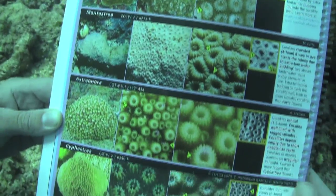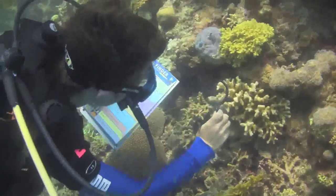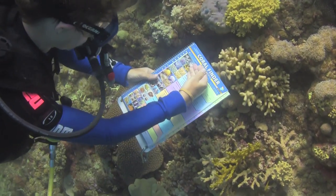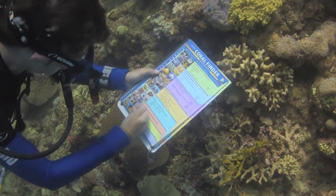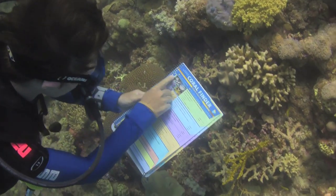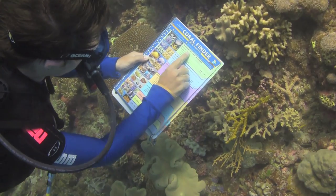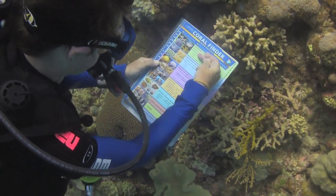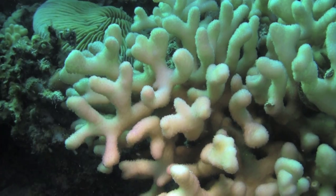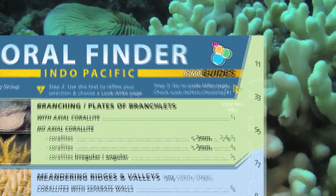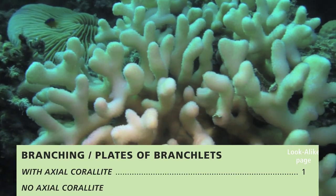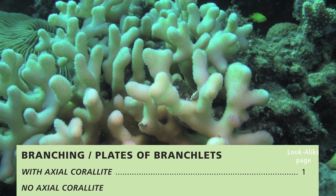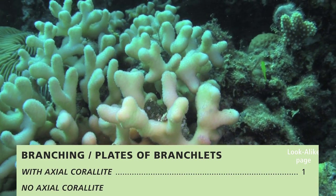Let's give it a go to prove the point. Here's my beautiful wife Rachel doing a spot of coral bothering — that's a brand new Coral Finder in her hand. Step one is to have a good look at the coral you want to identify, with a view to putting it into one of the Coral Finder key groups. In this occasion, there's no need to go past 'branching'.